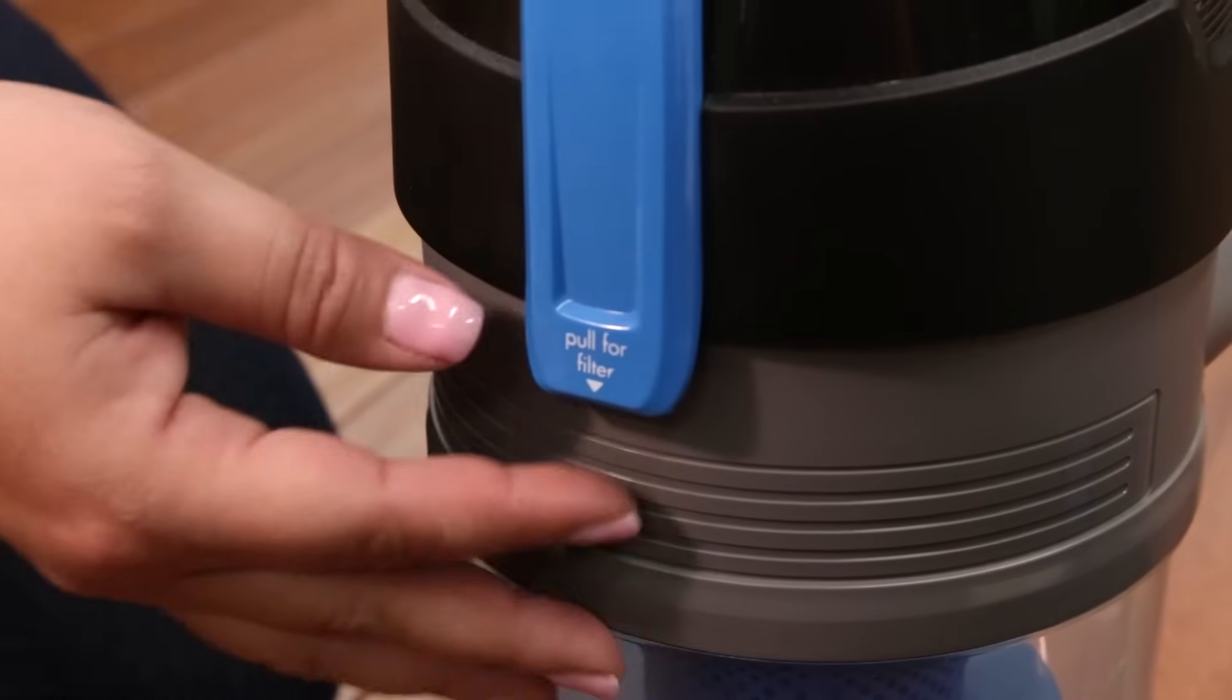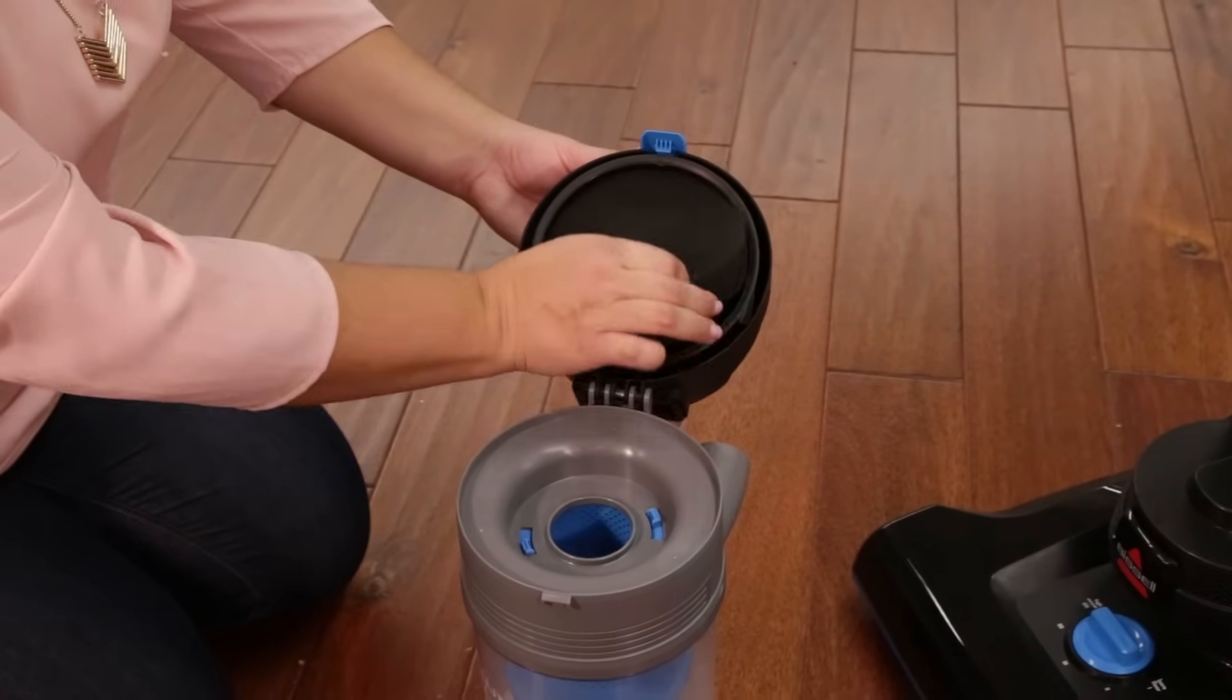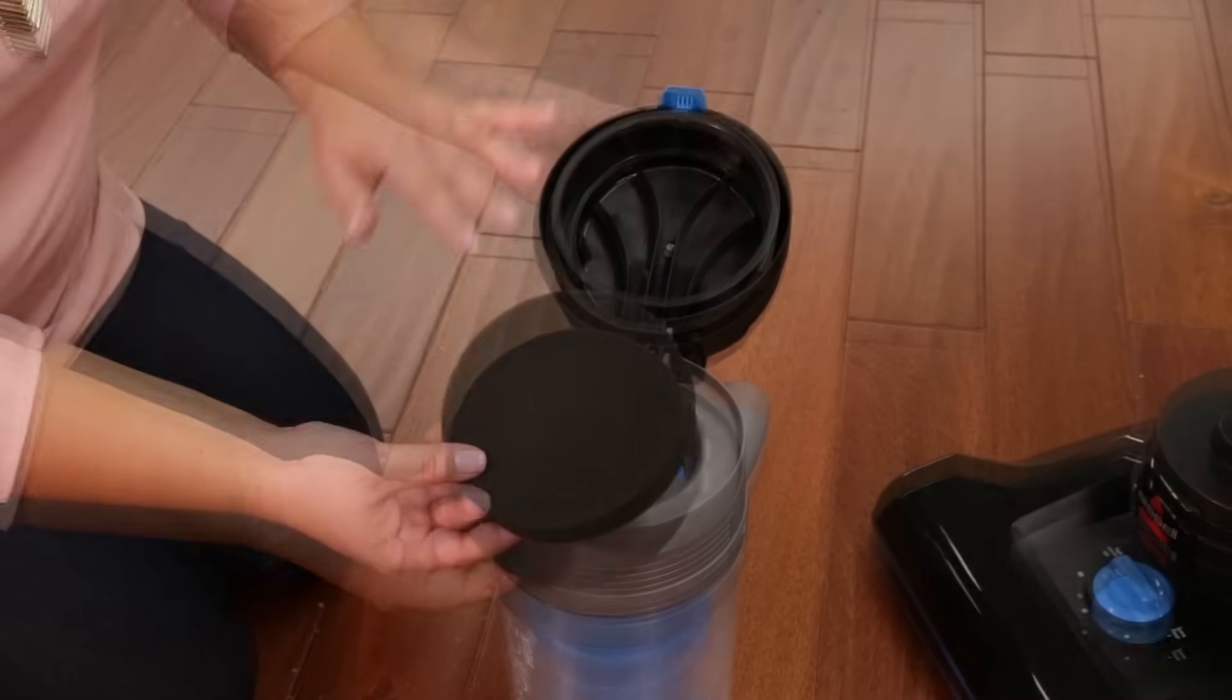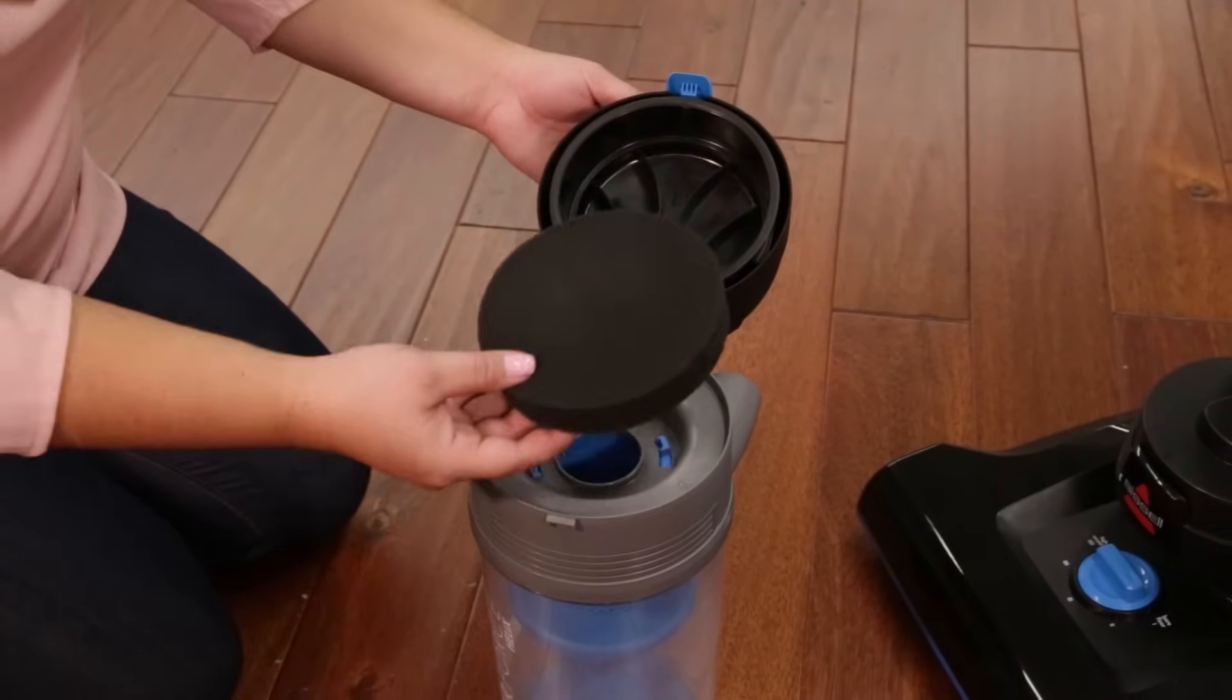To clean the premotor filter, open the dirt container lid by lifting the release latch on the front. Remove the premotor filter and pull the filter out to clean. Once it's clean and dry, place it back in the dirt container lid.